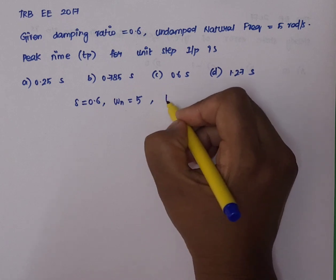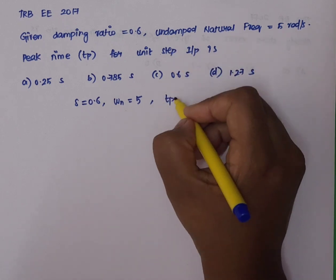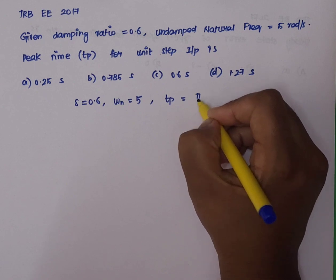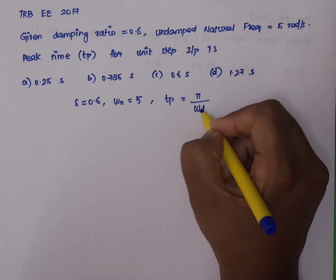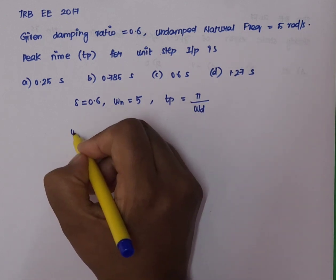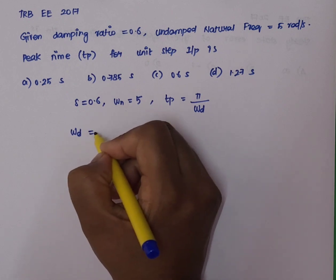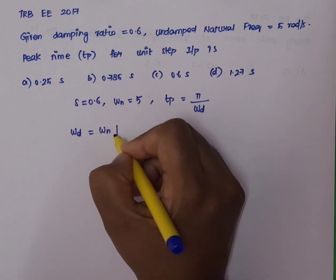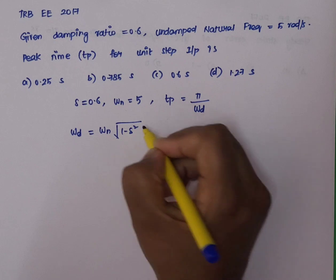What do we do here? TP for unit step input. So, what do we do? Pi divided by damping frequency ωd, which is equal to ωN into square root of 1 minus ζ square.